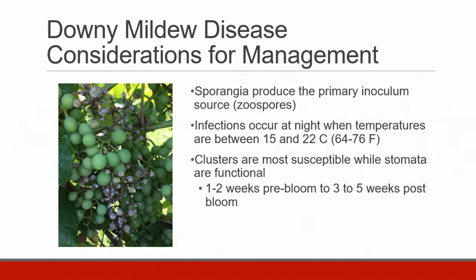There are a few key aspects of the downy mildew disease cycle that must be considered when developing effective management strategies. Sporangia produce zoospores, and it is the zoospores that serve as the primary inoculum. Sporangia can be produced from oospores that overwinter on leaves in the vineyard, or they can blow in on wind-driven rain. The majority of infections occur in the dark when temperatures are between 15 and 22 degrees Celsius. Leaves and berries are susceptible, but berries will not produce new inoculum once the stomata convert to lenticels. Thus, the critical period for infections is from one to two weeks pre-bloom to three to five weeks post-bloom, depending on the variety, and these primary infections occur at night or during dark periods.